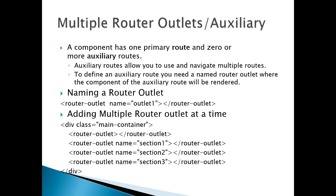First of all, if we want to create multiple routes, it is called auxiliary routes. By default, there is a main route which is our parent route — a parent route outlet. Along with the parent route outlet, we can create secondary outlets also. Those secondary outlets are called auxiliary routes. A component has one primary route and zero or more auxiliary routes, so you can have zero auxiliary routes or you can include multiple auxiliary routes.